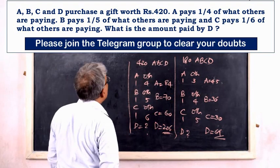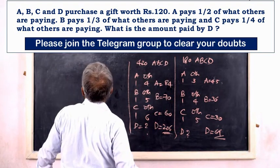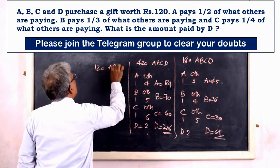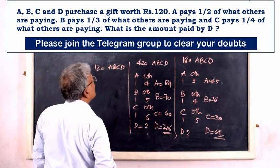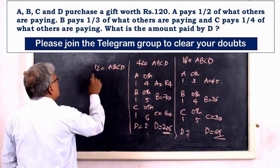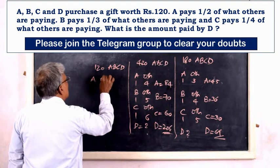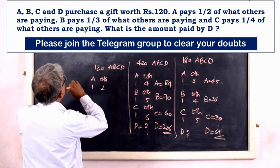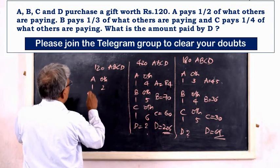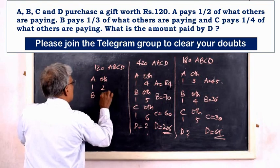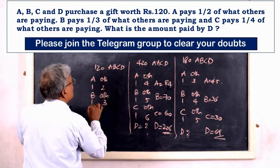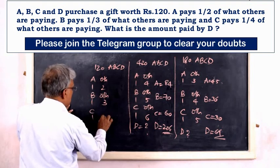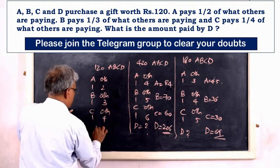Next question — total is ₹120. A pays half of what others are paying, so denominator is 2. B pays one-third of what others are paying, so denominator is 3. C pays one-fourth, so denominator is 4. D is the remaining amount.